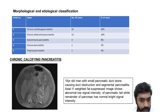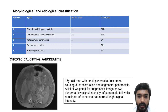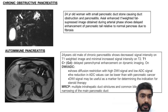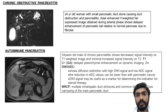Chronic calcifying pancreatitis: a case of a 16-year-old man with a small pancreatic duct stone causing duct obstruction and segmental pancreatitis — showing a tiny T1 hypointense area. Axial T1-weighted fat-suppressed image shows abnormal low signal intensity of the pancreatic tail, while the remainder of the pancreas has normal bright signal intensity. In chronic obstructive pancreatitis, a dilated pancreatic duct with an obstructing pancreatic stone was seen in a 24-year-old woman. Axial enhanced T1-weighted fat-suppressed image during arterial phase shows delayed enhancement of the pancreatic tail related to fibrosis.